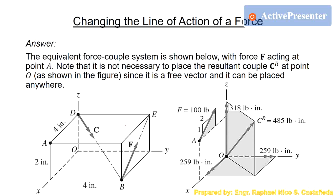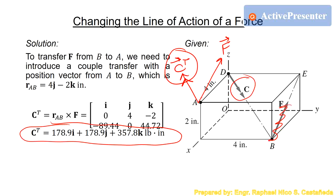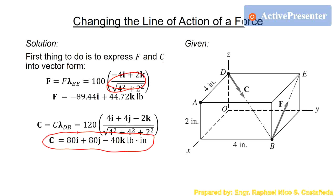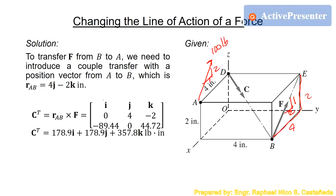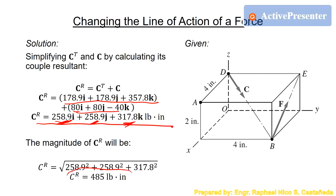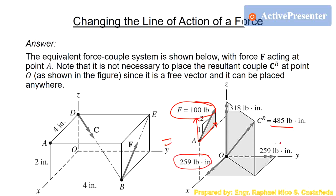The final answer: the force is a 100-pound force transferred from point B to point A, with a slope of 2 to 1 (you can express it in vector form if preferred). The couple resultant CR is a 485 pound-inch couple with three components CX, CY, and CZ. That is the final answer for this equivalent force couple system.